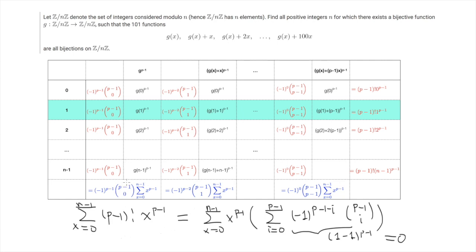We need to emphasize that the addition here is performed modulo n. So what we have proved is that this sum equals 0 modulo n. And what we are going to prove is that if p is a prime number dividing n, then this relationship cannot hold.